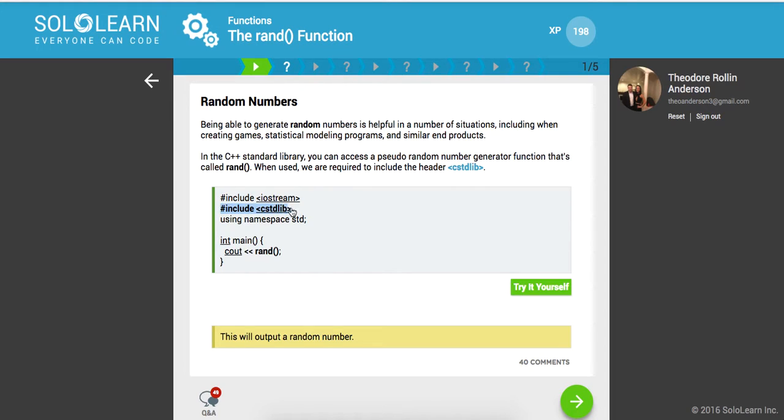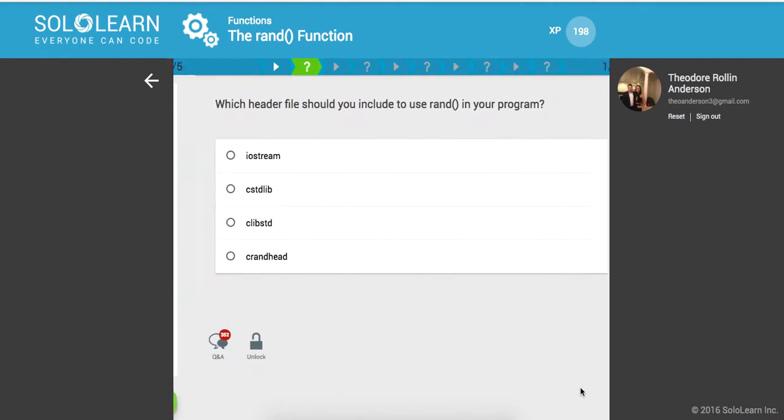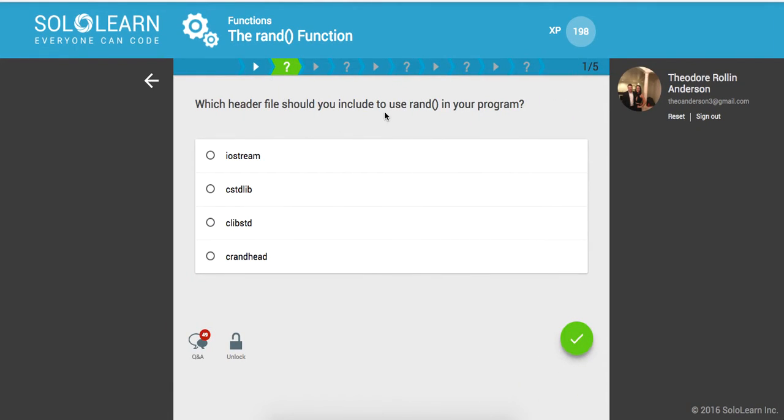So here's another library we need to include. We can call RAND, and I'm guessing this is going to output a random number. So which header file should you include to use RAND in your program? That would be the CSTDLib, which is going to deal with memory management, and then it also has our random generator.